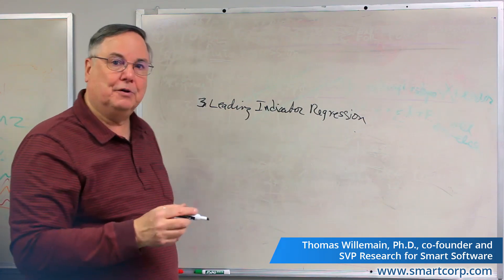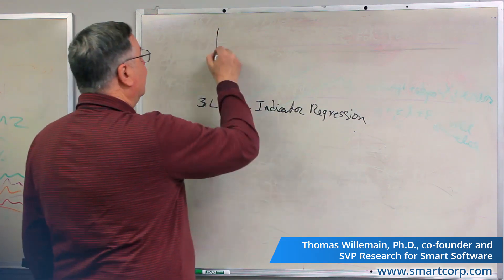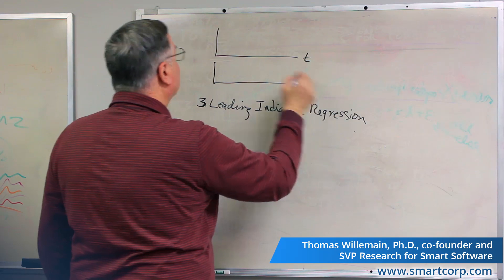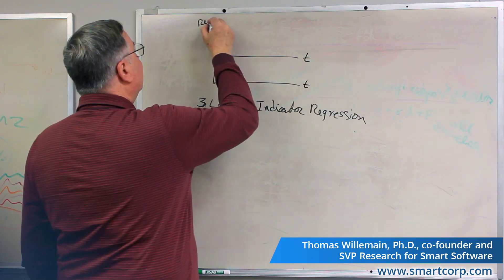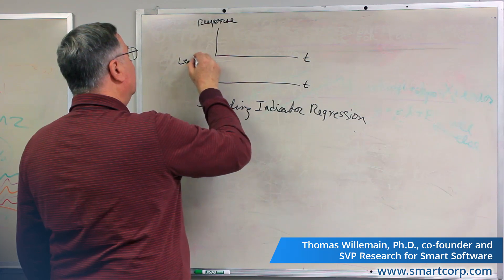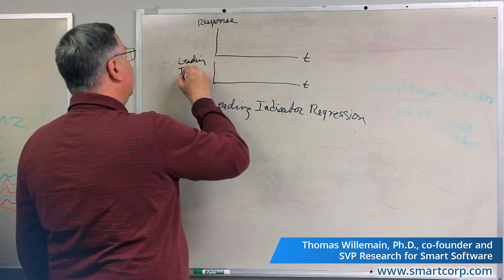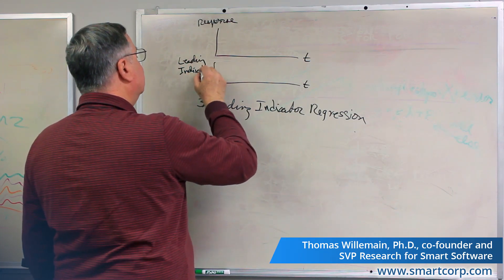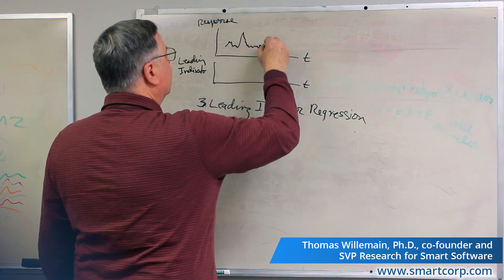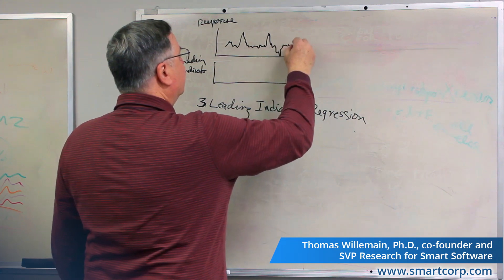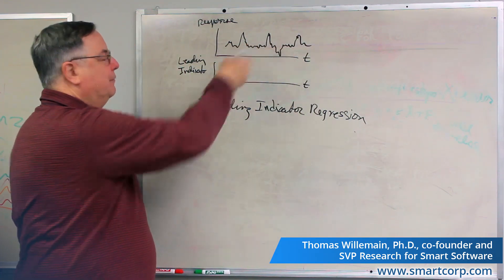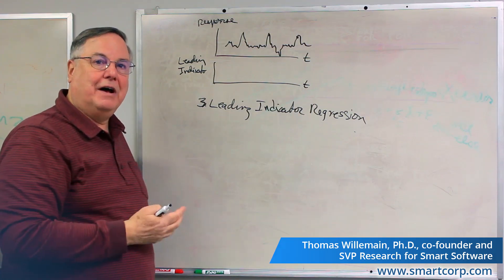So what that would look like in terms of time series is suppose that we have the two variables. We have the response, and we have the leading indicator, or what we think is a leading indicator. So the response might be, I'll exaggerate here, maybe something like this.